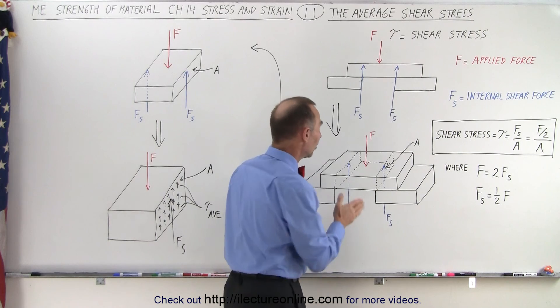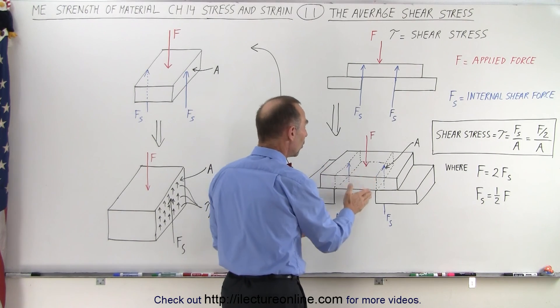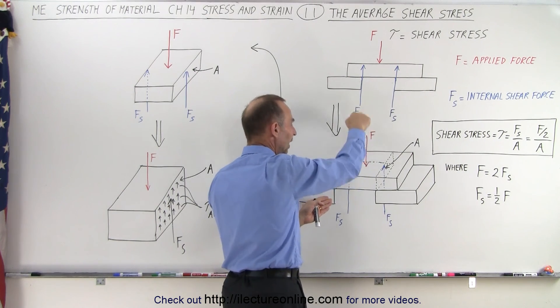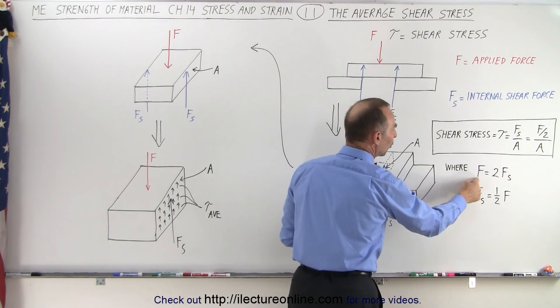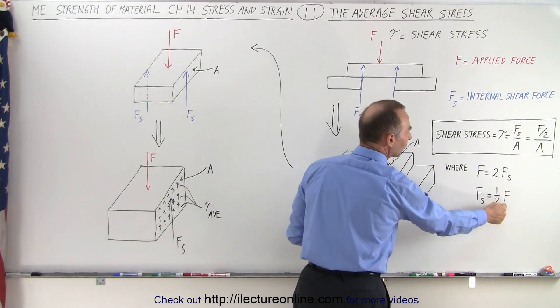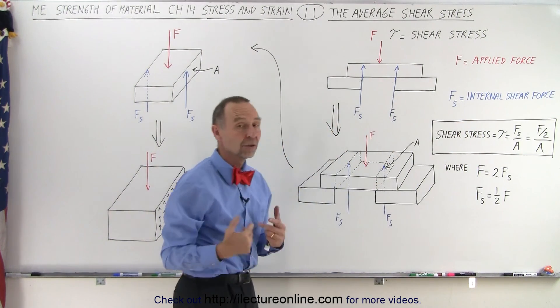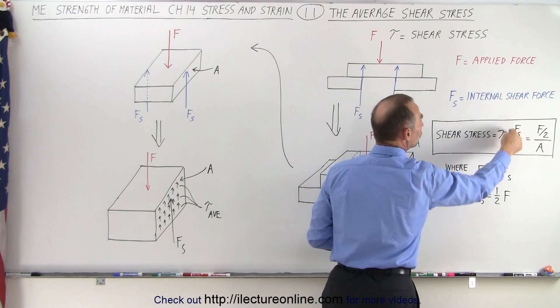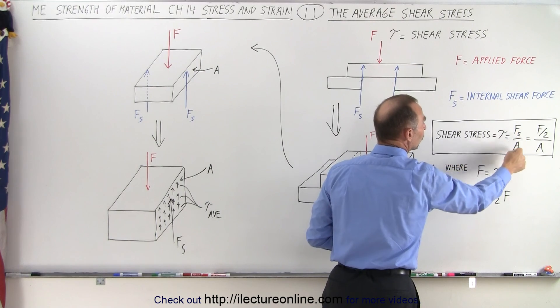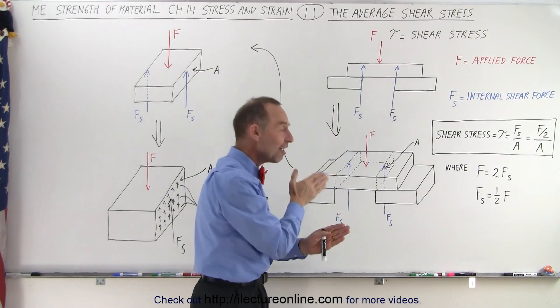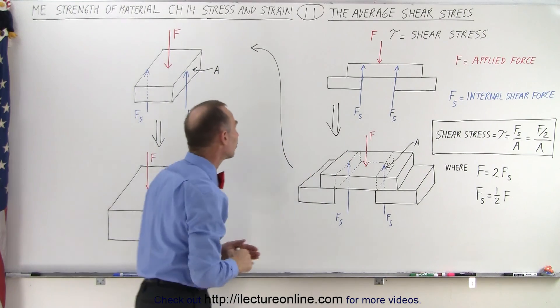Now, in this case, since there's two sides here where we experience that shear force, and we have only one force pushing down on it, you can then see that the force is equal to twice the shear force, or the shear force is one-half the total force applied at the top. So in this case, the shear stress indicated by the letter tau is equal to the shear force divided by the area, which is half the force applied. So half on one side and half on the other side.